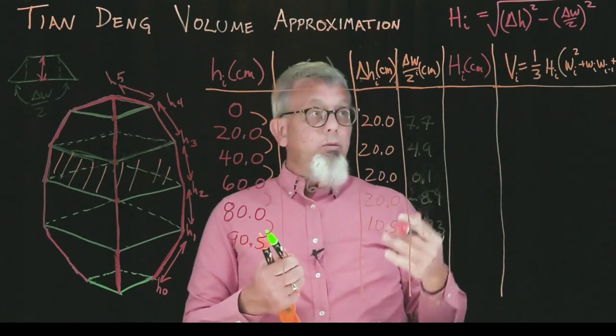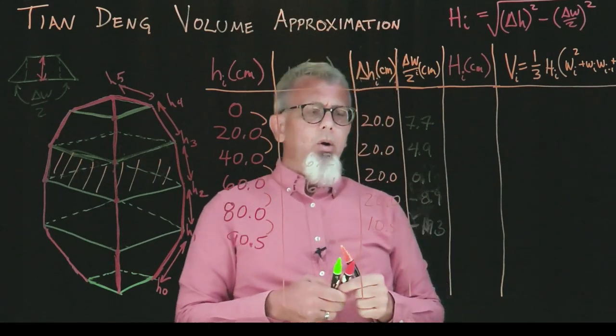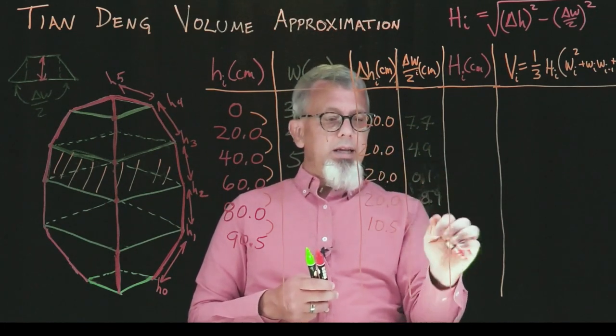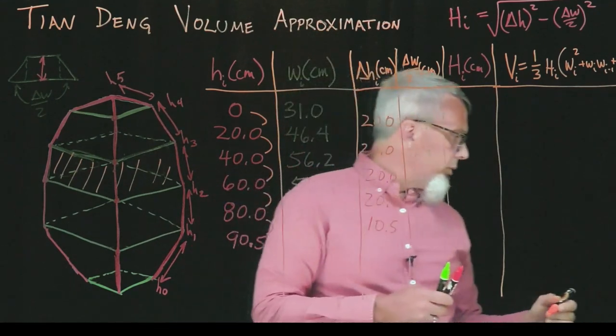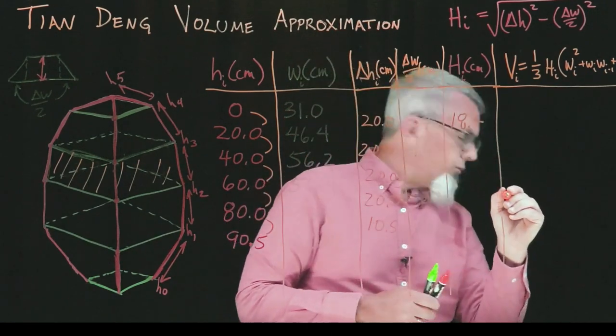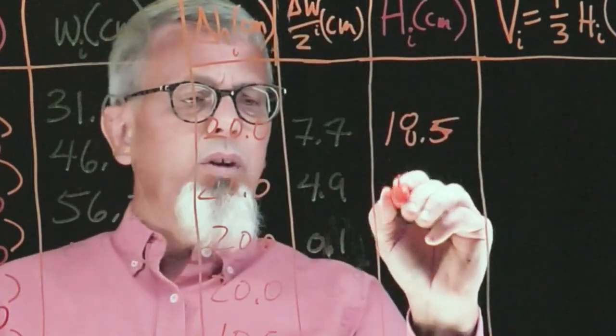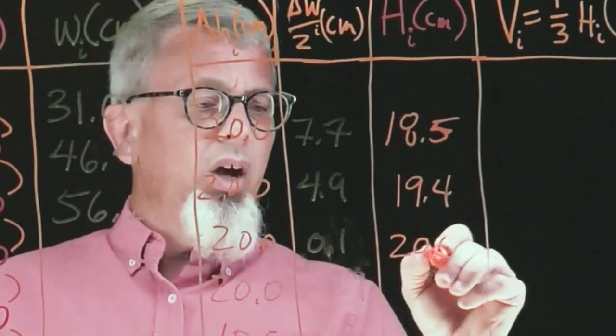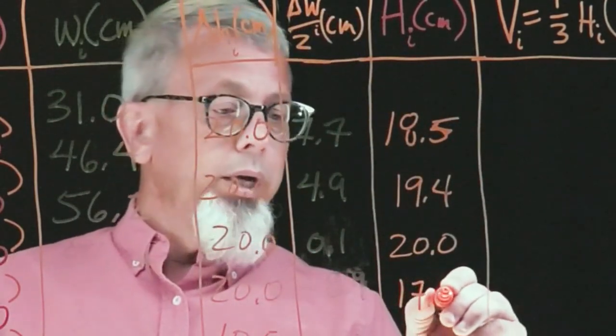We can put it into the spreadsheet or do it by hand however we'd like. I've already calculated some of those values here. It looks like I can get about three sig figs. I get 18.5 centimeters, 19.4, 20.0, and 17.9.